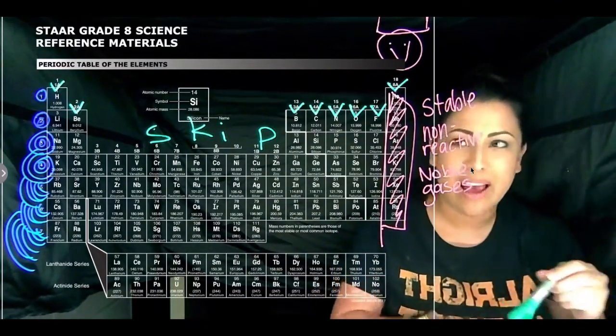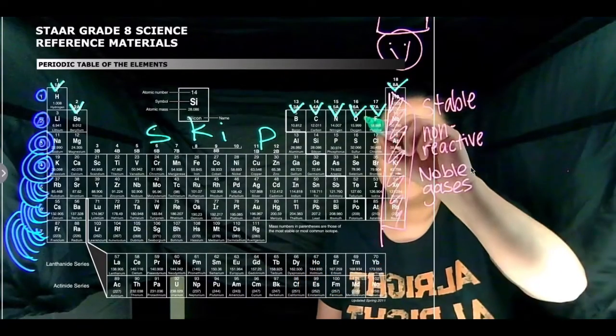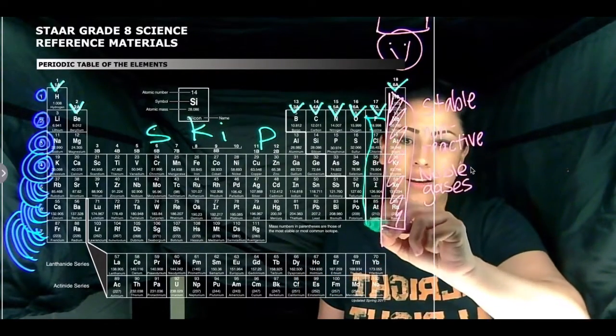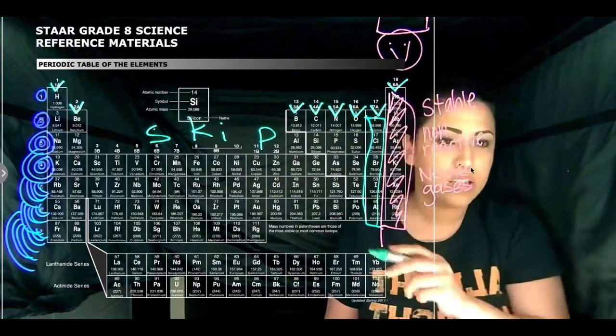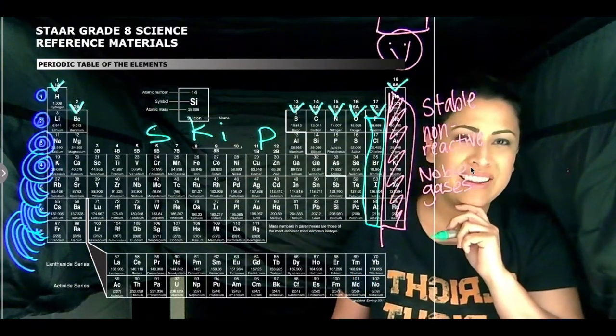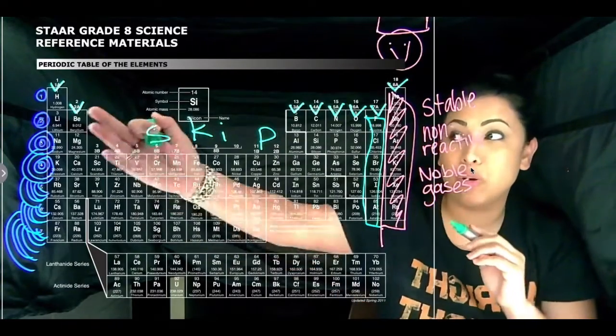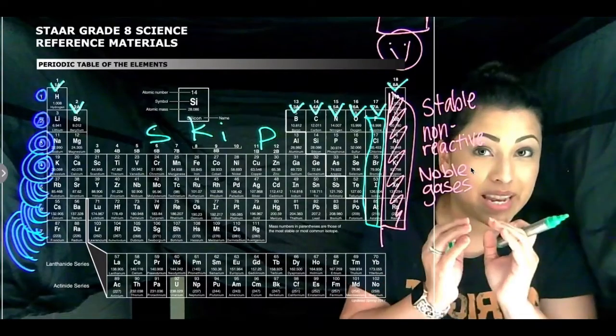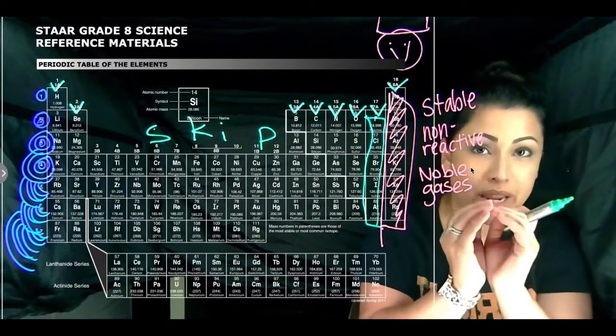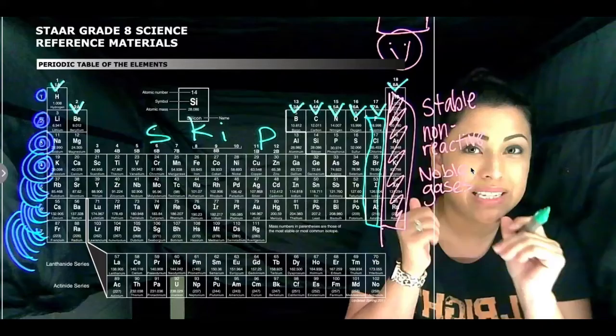Right. So we have group 17 is almost there. And then also, what other group? This one's a little tricky, but group one is also really close because they can just get rid of that one. And then the next energy level or ring will be full, which means it's stable.